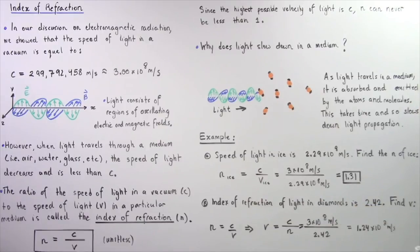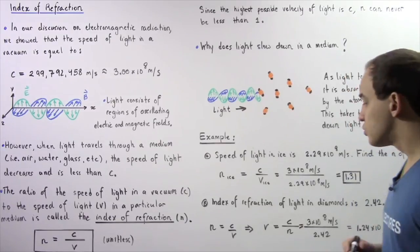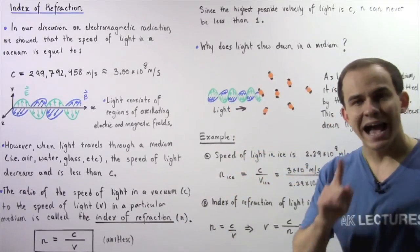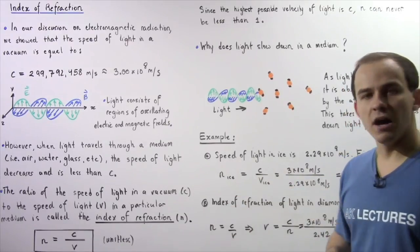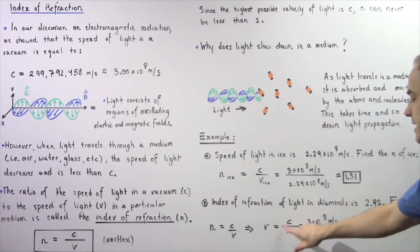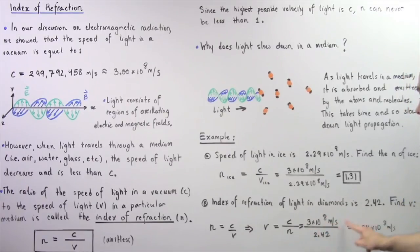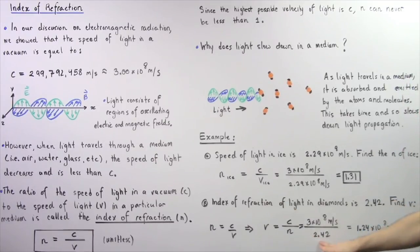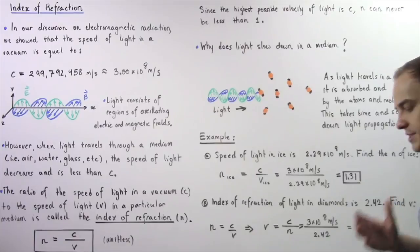Now for part B: the index of refraction of light in diamonds is 2.42. We want to find the speed of light v inside the diamond. Rearranging n equals c divided by v, we get v equals c divided by n, which equals the speed of light in a vacuum divided by 2.42, giving us approximately 1.24 times 10 to the 8 meters per second.